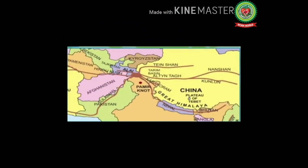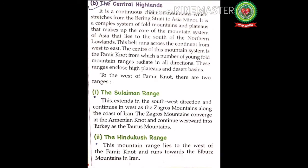The center of this mountain system is the Pamir Knot. The Pamir Knot is a complex mountain region that extends about 275 km east to west and about 250 km north to south. It has been described as a 'knot,' referring to the convergence from which several of Asia's main ranges radiate — the Himalayas, Karakoram, Hindukush, Kulnur, and Tainshan.